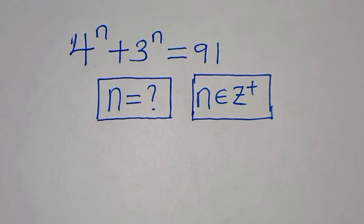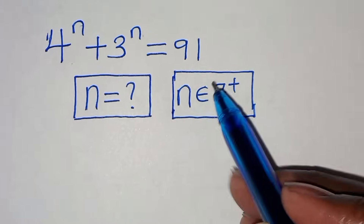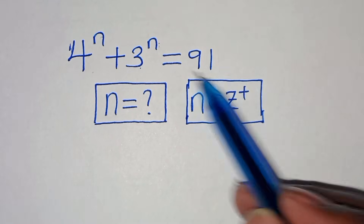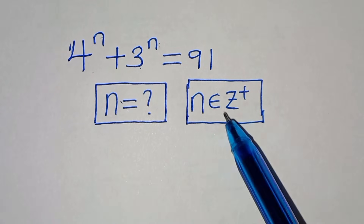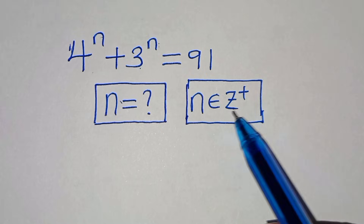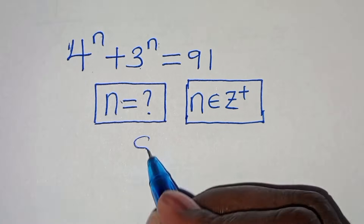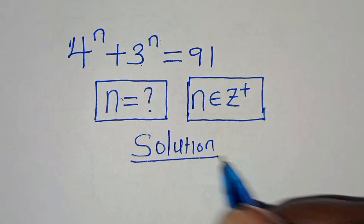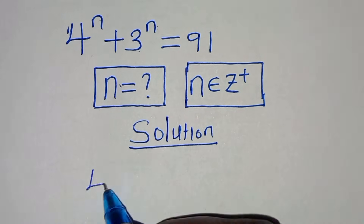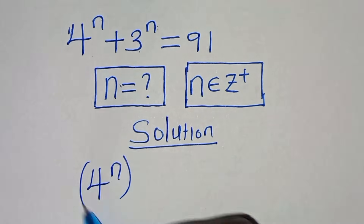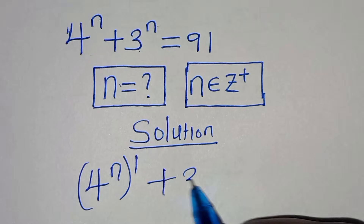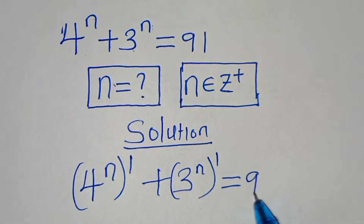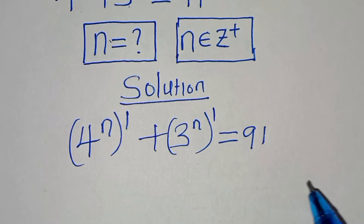Hello everyone, you are welcome to solve this nice algebra problem: 4 to the power of n plus 3 to the power of n equals 91. What is the value of n, given that n is an element of the positive integers? Now let's provide a solution. We start by expressing 4 to the power of n as 4 to the power of n raised to the power of 1, plus 3 to the power of n raised to the power of 1, equal to 91.